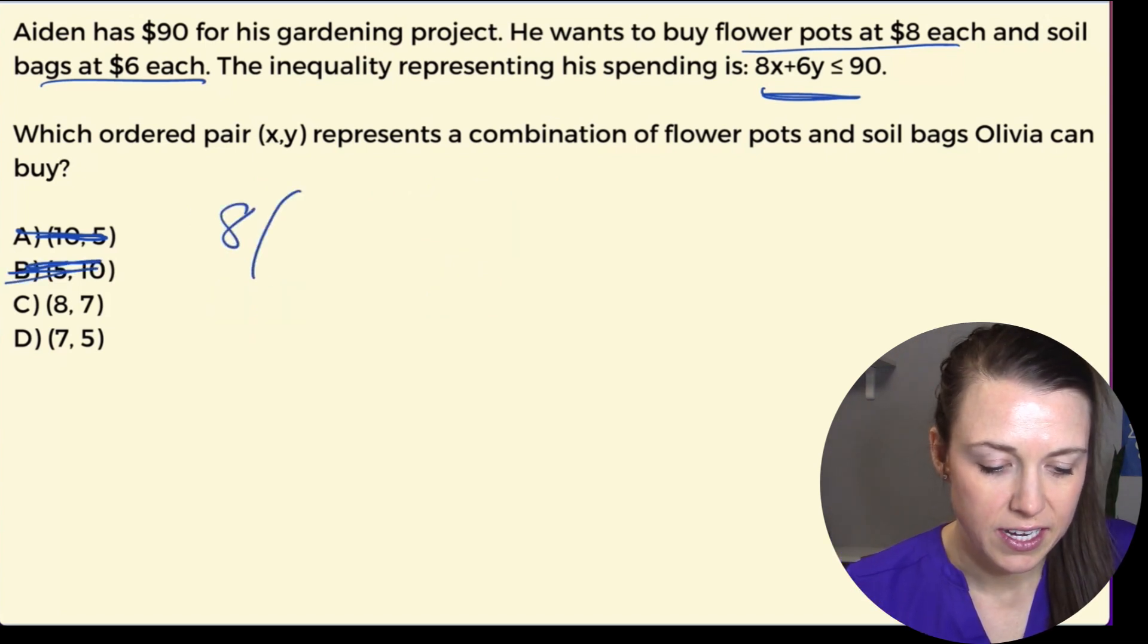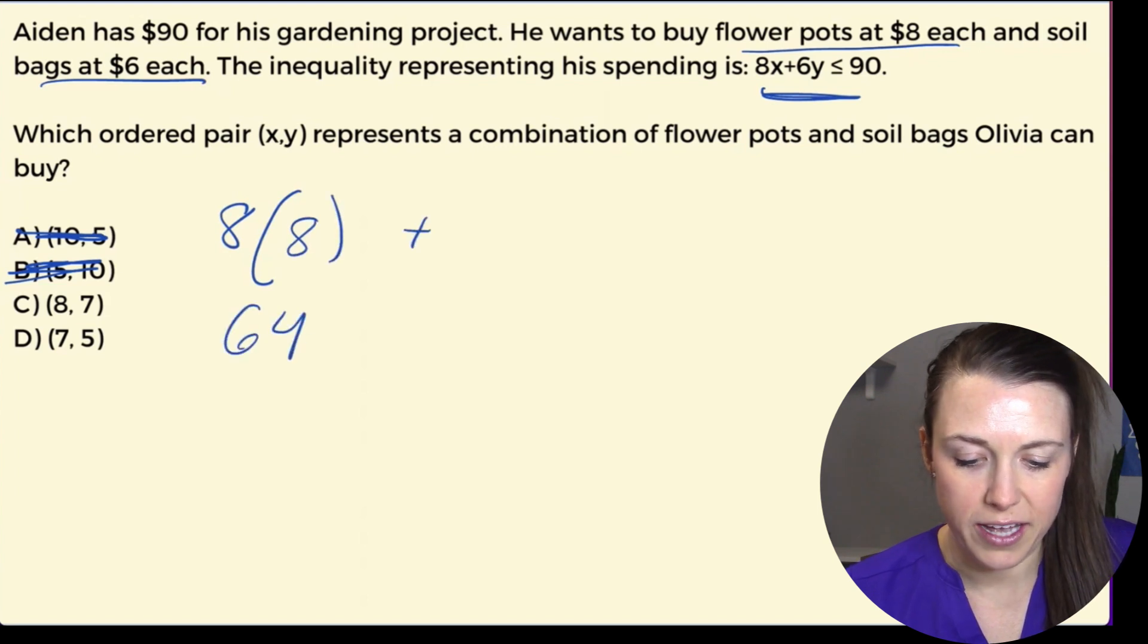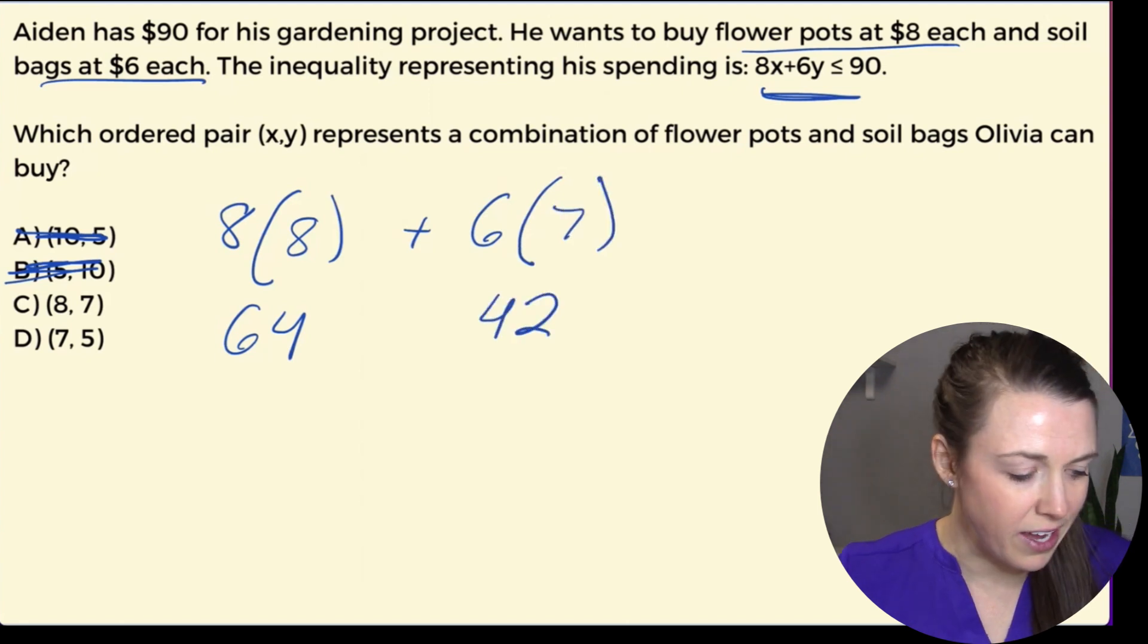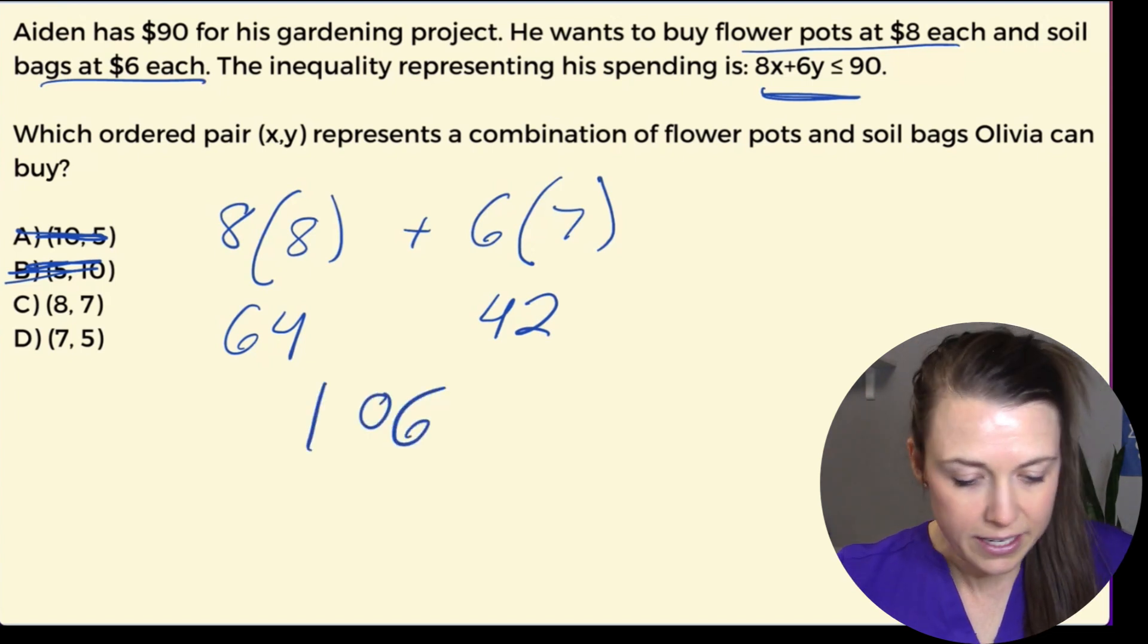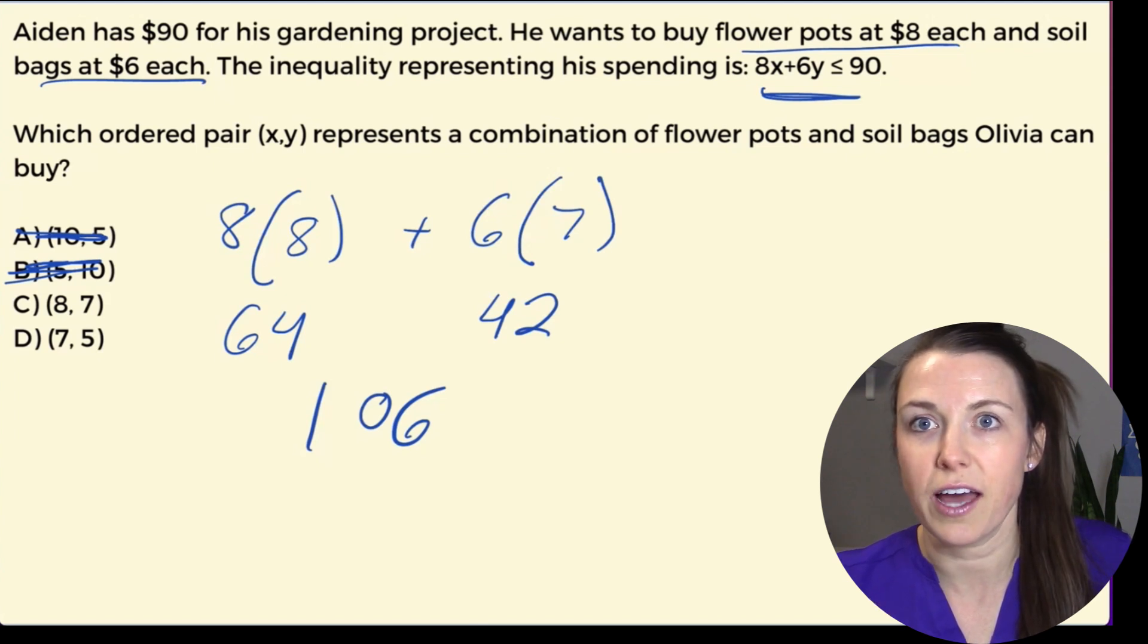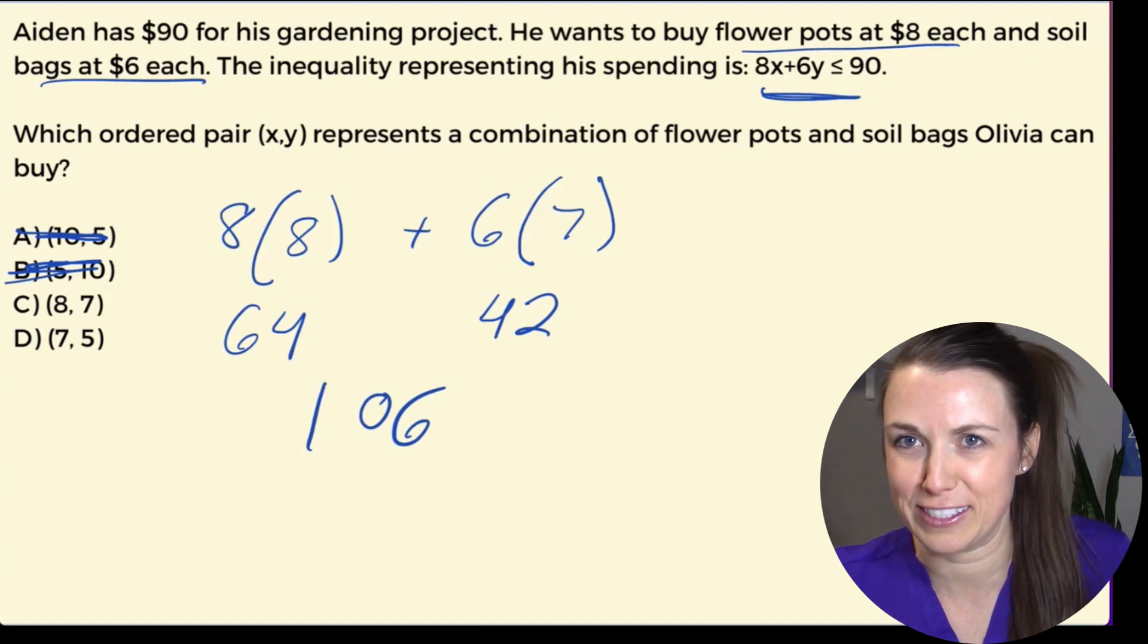Let's try C. I have 8 times 8, which is 64 plus 6 times 7 is going to be 42. Again, we are over. This is 106. Guys, these are not working. Aiden and Olivia really need to figure this out before they go into the store.